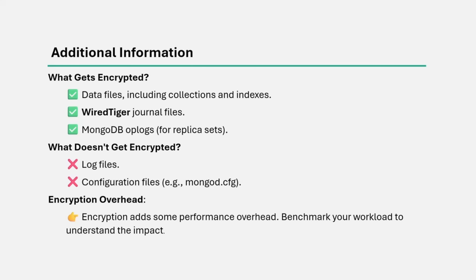What data gets encrypted? All data files including collections and indexes are encrypted. Journal files also get encrypted, and MongoDB op logs for replica sets also get encrypted. On the other hand, log files are not encrypted, and configuration files like mongod.cfg are also not encrypted.